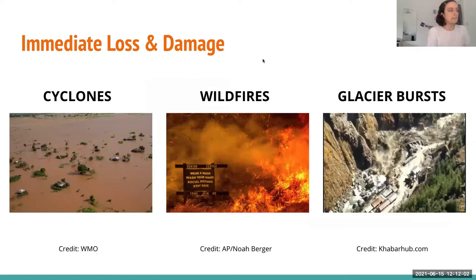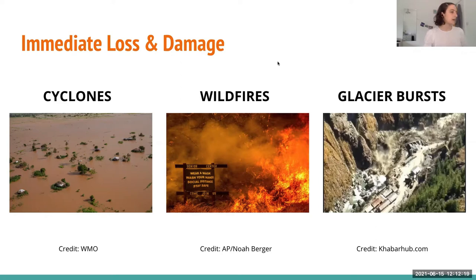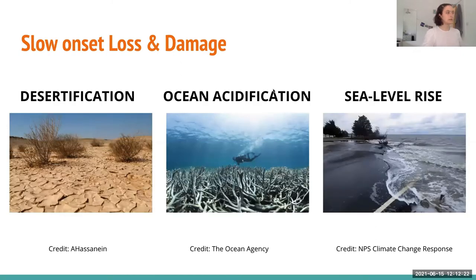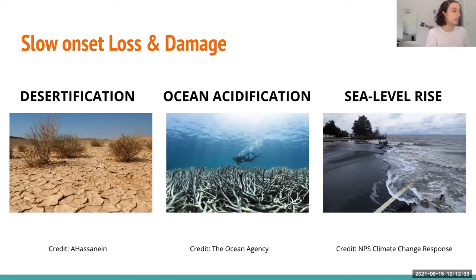Loss and damage can be immediate, such as cyclones, wildfires, or glacial burst floods — and we've seen lots of examples of these in recent years. We also have slow-onset loss and damage, which occurs over a longer period of time, such as desertification, ocean acidification — there's a picture of the Great Barrier Reef — and sea level rise, which is having big effects in the Pacific Islands.